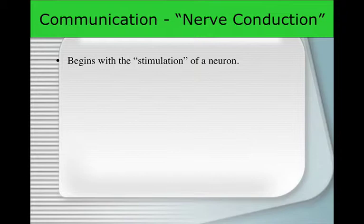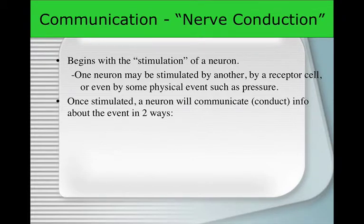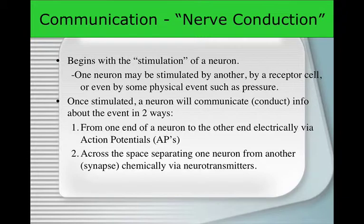Nerve conduction always starts with the stimulation of a neuron — a nerve cell. One neuron may be stimulated by another, or by a receptor cell, or sometimes even by physical events like pressure. Once stimulated, the neuron will communicate information about the event in two ways: electrically from one end of the neuron to the other via action potentials, and across the space separating neurons — called synapses — chemically via neurotransmitters.